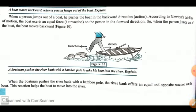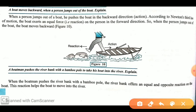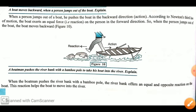Another example: how can a person jump from a boat to the sea shore? It is again an application of Newton's third law of motion. When the person pushes the boat in the backward direction, this is the action force on the boat. The boat applies a reaction force on the person in the forward direction — that is why the person moves forward and the boat moves backward.